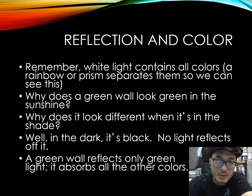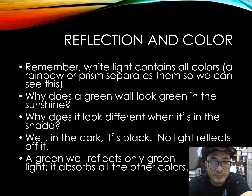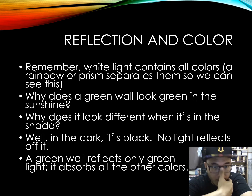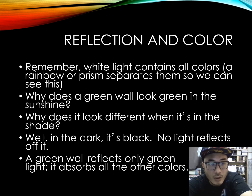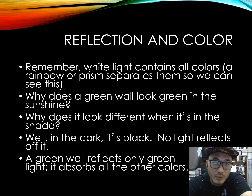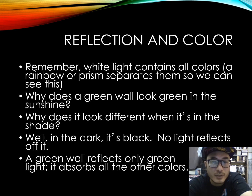How does reflection determine colour in light? Remember, white light contains all colours, and a rainbow or prism separates them so we can see this. Why does a green wall look green in sunshine, or look different when it is in shade? The part in shade becomes dark — it becomes black — and no light will reflect off a black material.